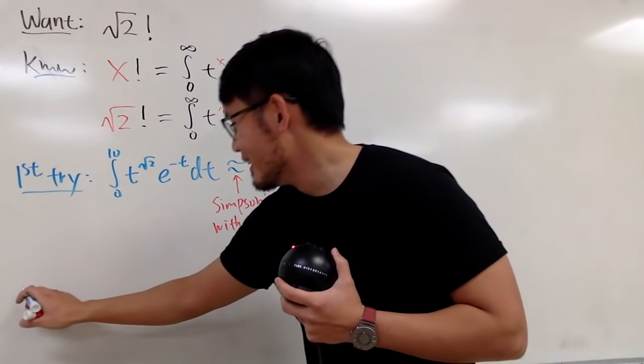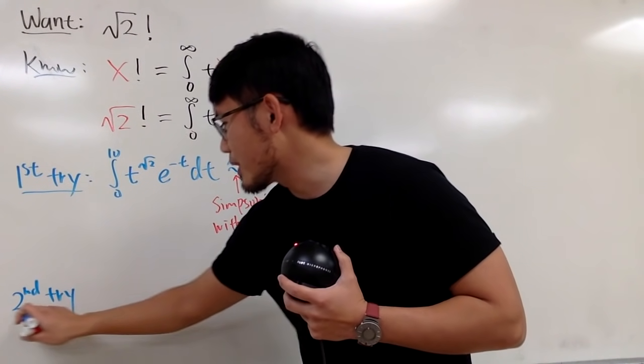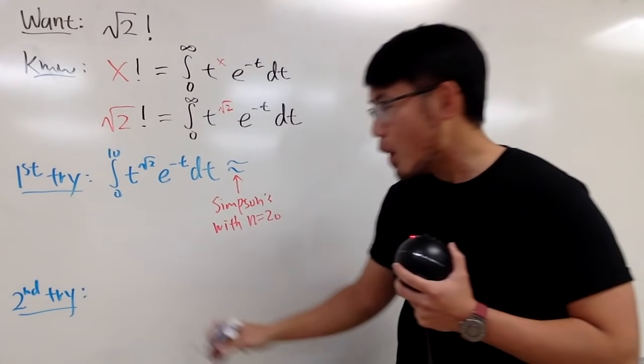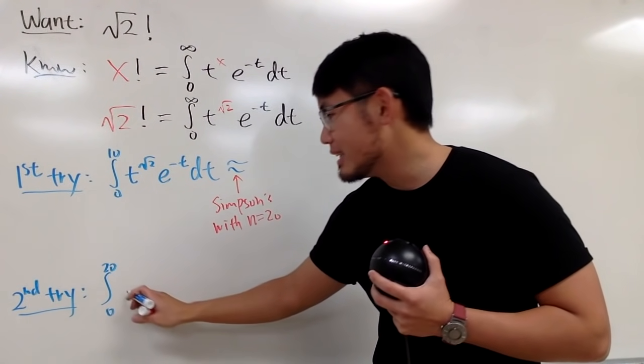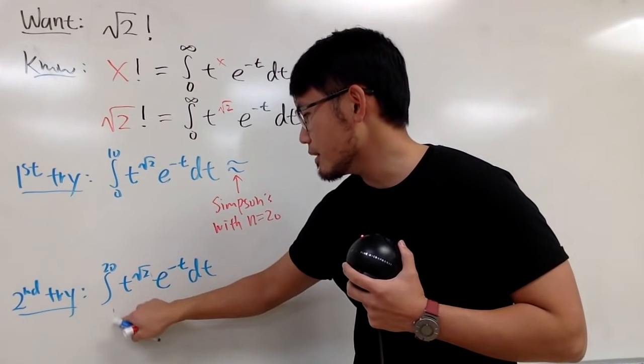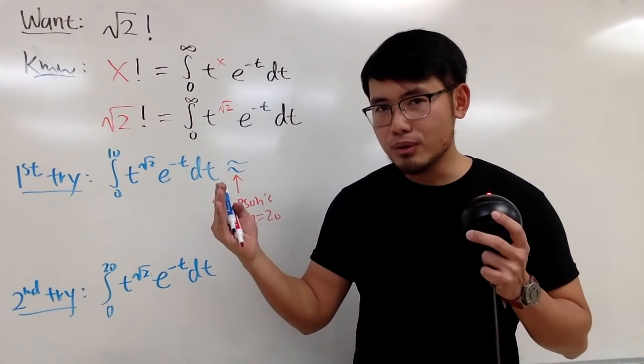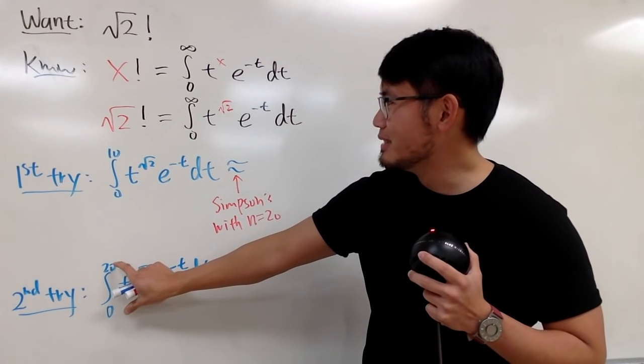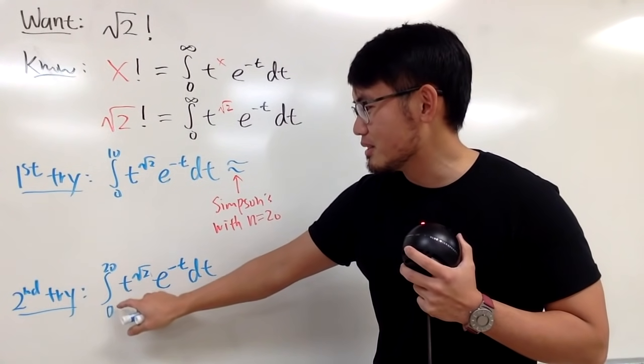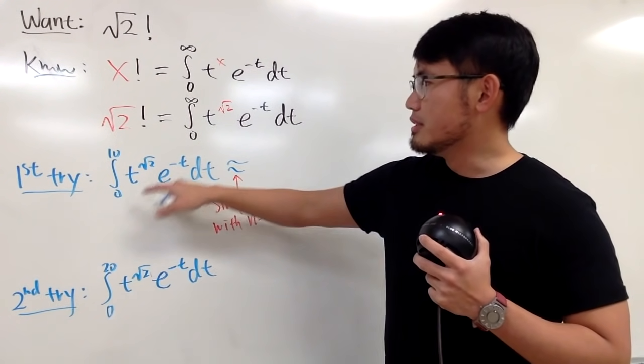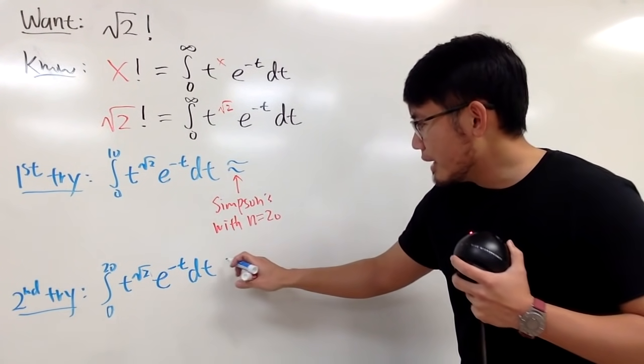Well, I have another proposal for you guys. This is going to be my second try. Suppose, I go from 0 to 20, and of course, the inside stays the same. So, this time, you see, I have a longer interval. So, of course, this perhaps is better compared to that, right? Because this is going from 0 to 20. This is only going from 0 to 10. We need to go from 0 to infinity, right?